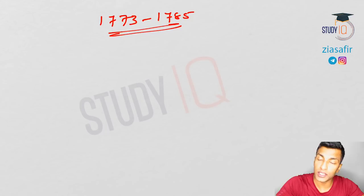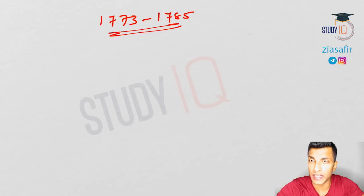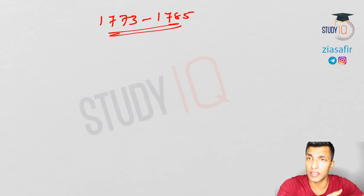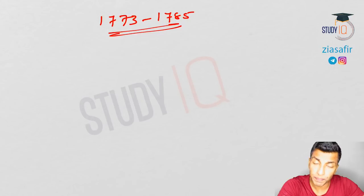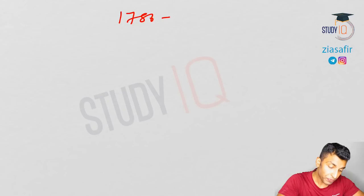Hello students, welcome to Study IQ. In the previous session we talked about the period 1773 to 1785. We discussed Lord Warren Hastings and the problems he faced. We talked about the Regulating Act of 1773, Pitt's India Act of 1784, and various other facts connected to Lord Warren Hastings. Now in this session I'll be discussing the period 1786 to 1793.